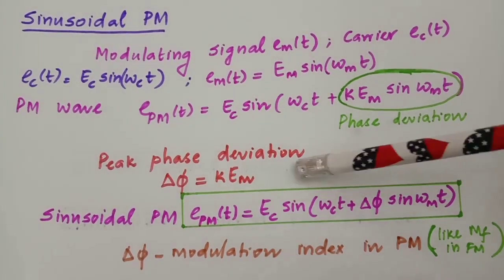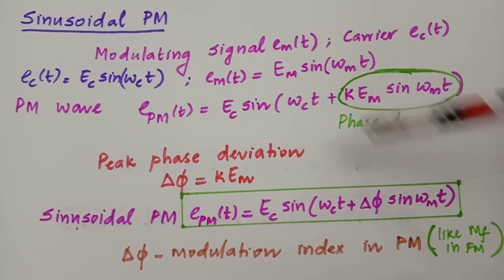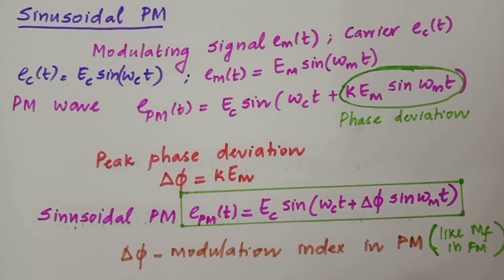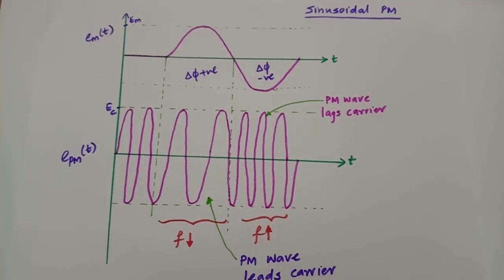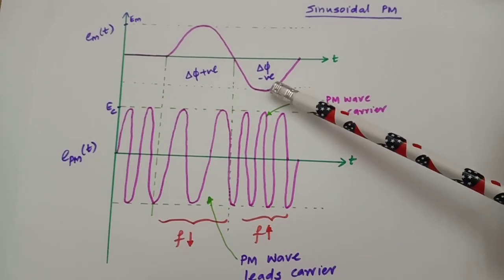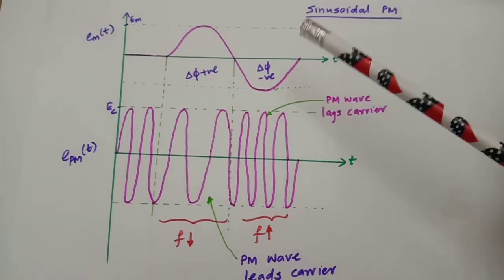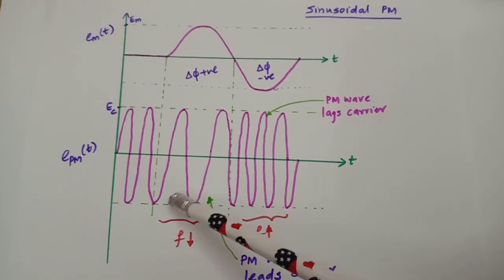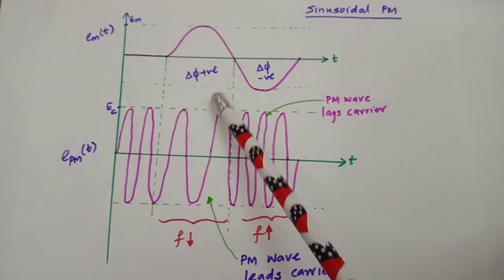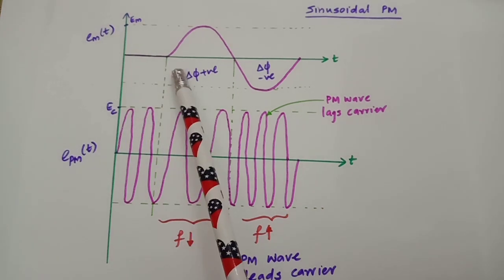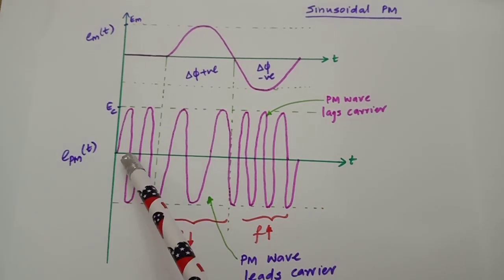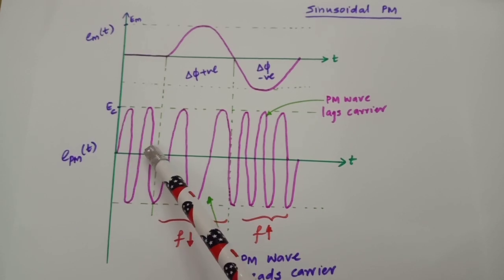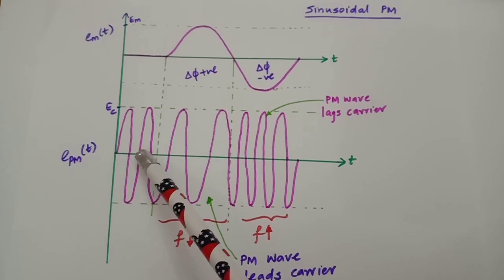That covers sinusoidal PM — the expression is almost the same as FM, and the phase deviation K·E_M is very similar to M_F in FM. Now, this is the pictorial representation explaining the concept of sinusoidal phase modulation. We have a sinusoidal modulating signal and a PM modulated wave. When the modulating signal is zero — that is, there is no modulating signal — you find that there is zero phase difference, and the carrier passes through unchanged as the output of the phase modulated wave.